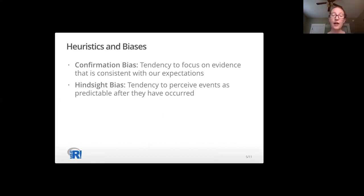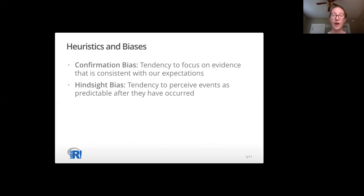Sometimes we have to worry about accidentally deceiving ourselves. There's lots of research about heuristics and biases that influence human perception. For example, there's confirmation bias, which is a tendency to focus on evidence that is consistent with our expectations, and hindsight bias, which is a tendency to perceive events as predictable after they have occurred. These biases affect all people, including scientists.